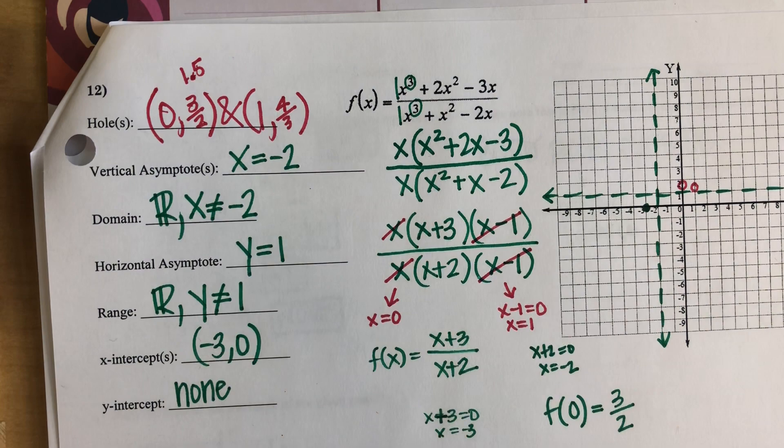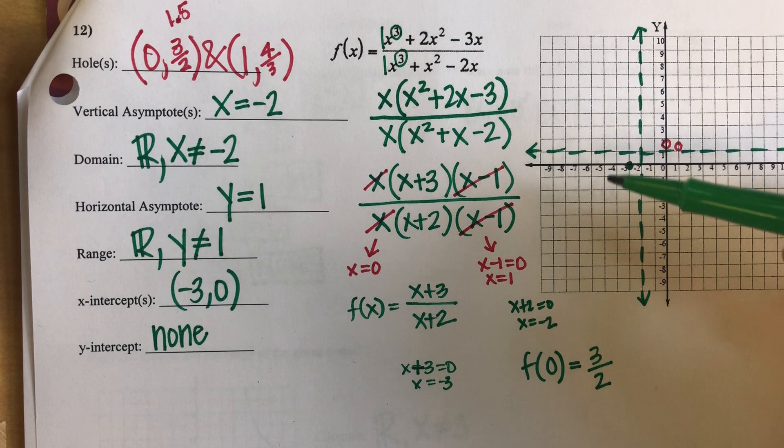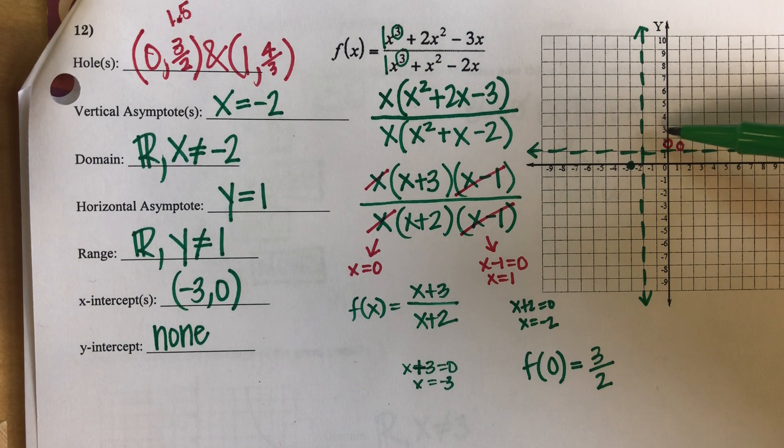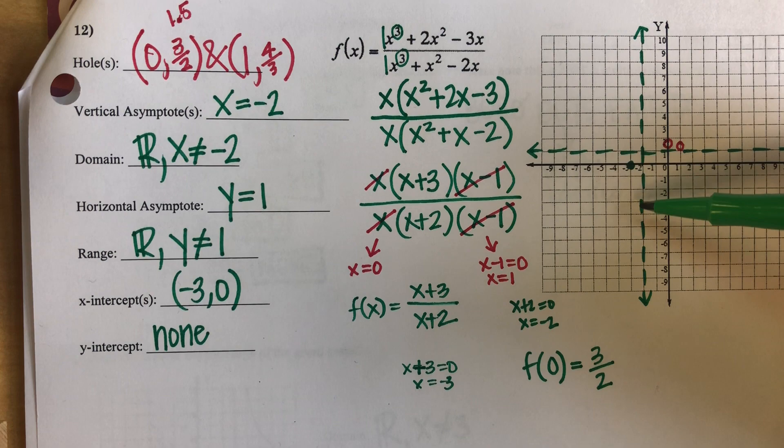That's it for that question other than typing your function into your calculator and sketching your graph. I see if I have this stuff over here there's probably going to be a little curve this way, and if I have a point right here there's probably going to be a curve right here.